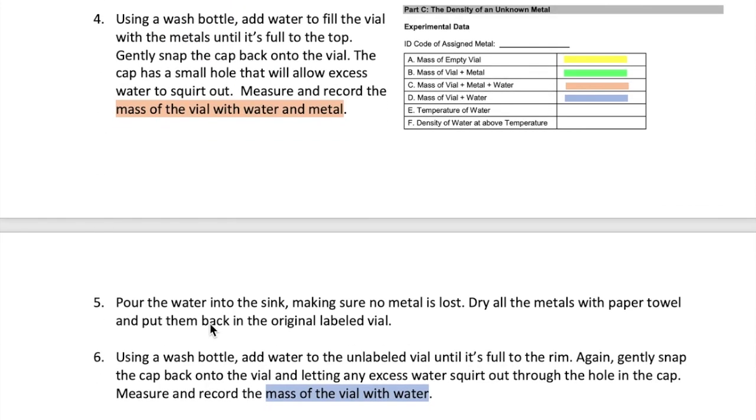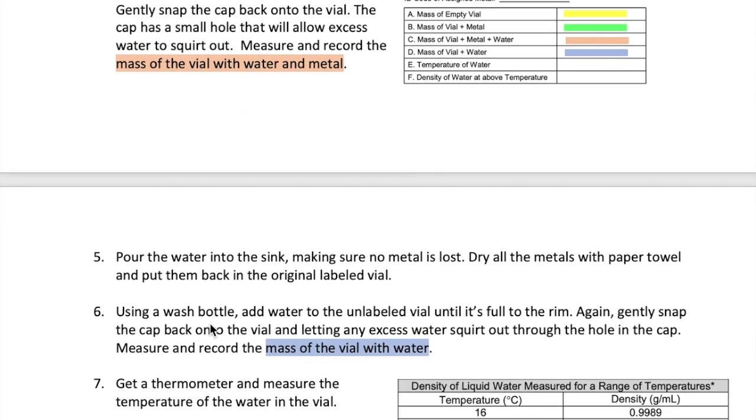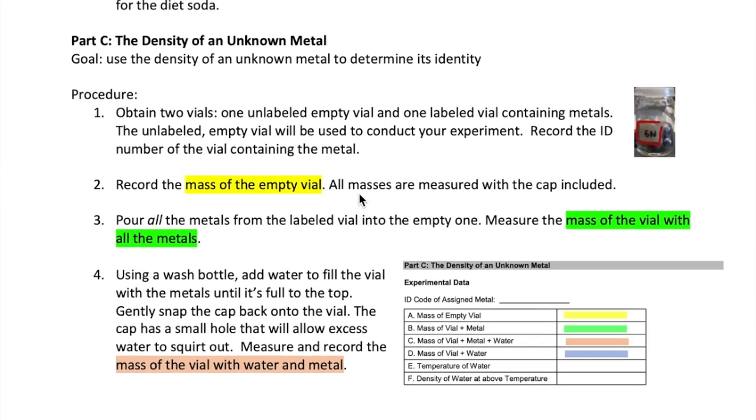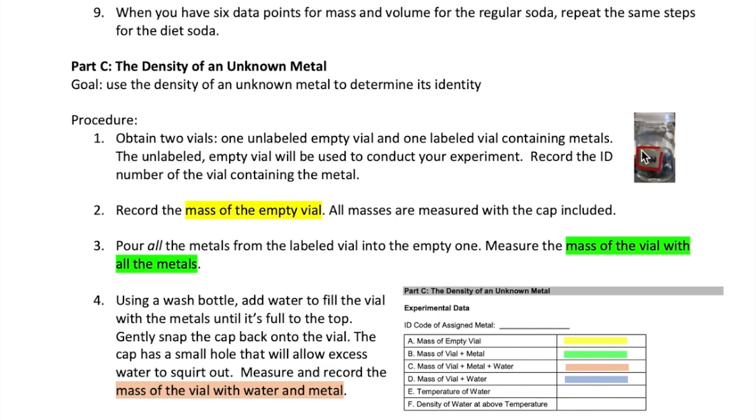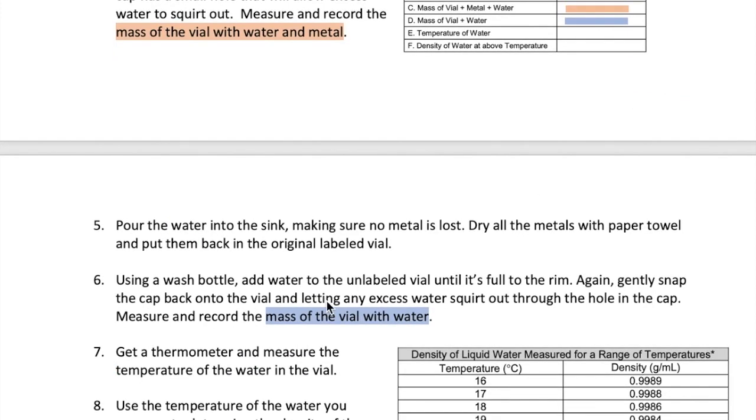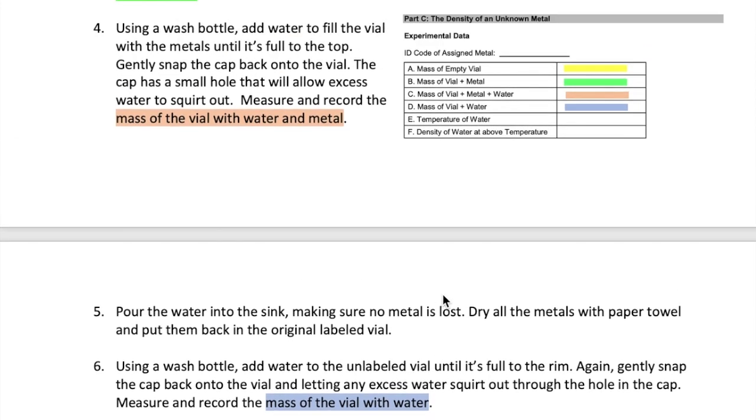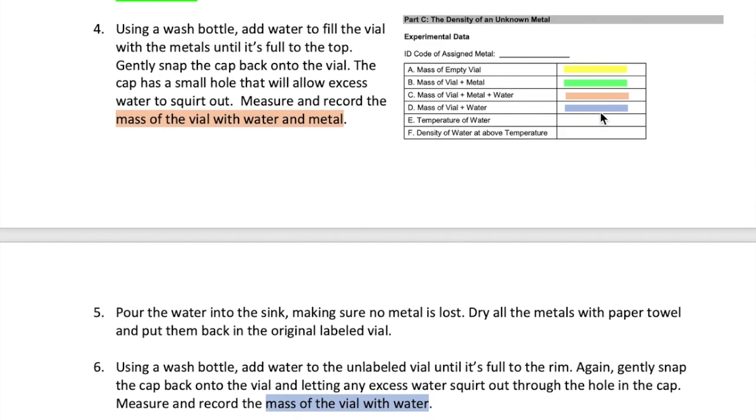Lastly, you want to pour out all the water and carefully remove the metal pieces. Dry them and then put them back in its original vial that has the label. Now, add water to the empty unlabeled vial until it's full to the top again. Gently put the cap back on. Dry the outside of the vial and then measure the mass of the vial containing just water now and record it here.